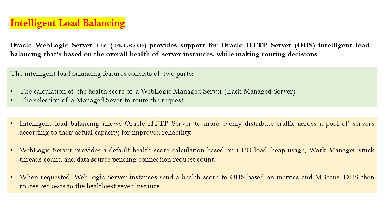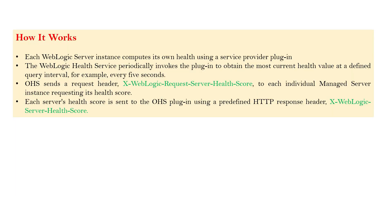So the request will no longer be based on static round-robin only. Instead, based on the load, capacity, and current resource utilization of your backend application servers, you can route the request. Each WebLogic server instance computes its own health using a service provider plugin. The WebLogic server service periodically invokes the plugin to obtain the most current health value at a defined query interval — for example, every five seconds.